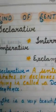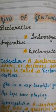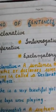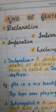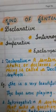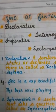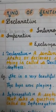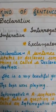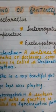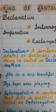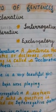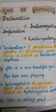Now, kinds of sentences — there are four kinds of sentences: declarative, interrogative, imperative, and exclamatory.